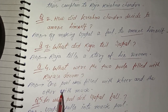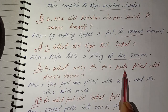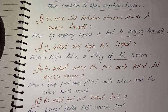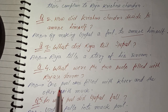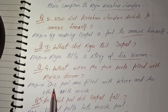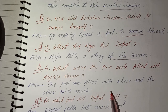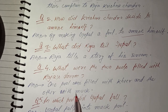Next question: What were the two pools in Raja's dream? The answer is: one pool was filled with kheer, and the other with mud (kichad). Raja ke sapne mein ek pool kheer se bhara tha aur doosra kichad se.